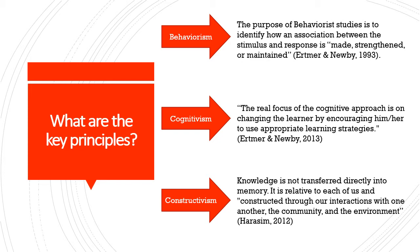Cognitivism stresses complex cognitive processes like thinking, problem-solving, language, concept formation, and information processing. The acquisition of knowledge can be directly related to the observation of others through social settings and experience. The mind is viewed as a computer — an approach called 'mind as computer' — and students' mental processing is referred to as cognitive information processing. Cognitivism emphasizes the role of environmental conditions, practice and feedback, and mental activities that lead to a learner's response. According to Ertmar and Newby, the real focus of the cognitive approach is on changing the learner by encouraging him or her to use appropriate learning strategies.